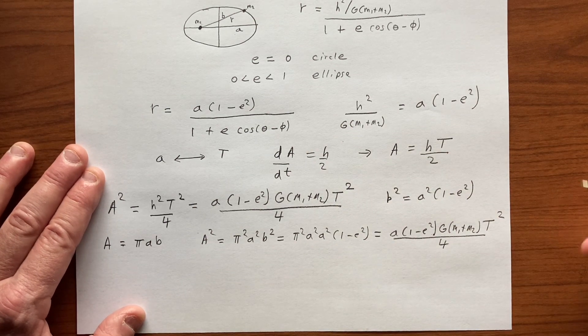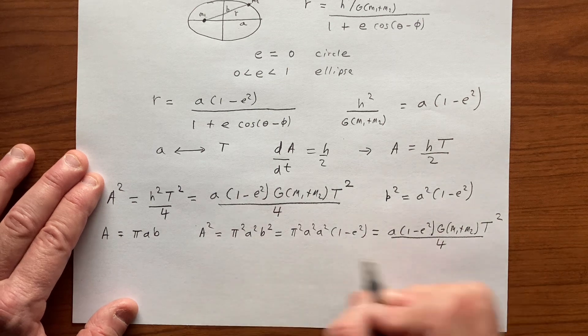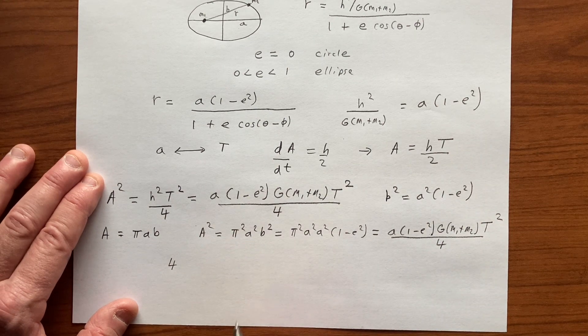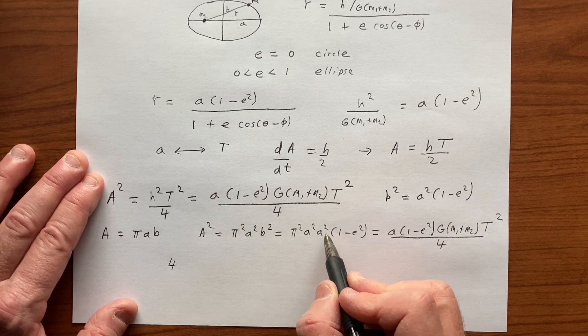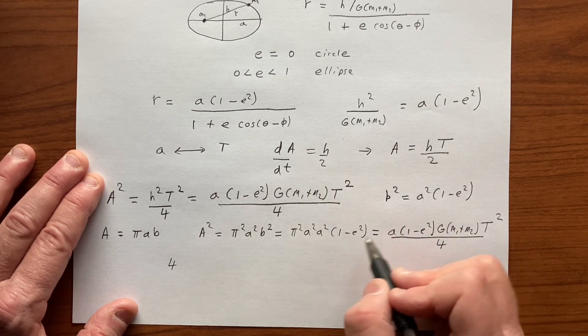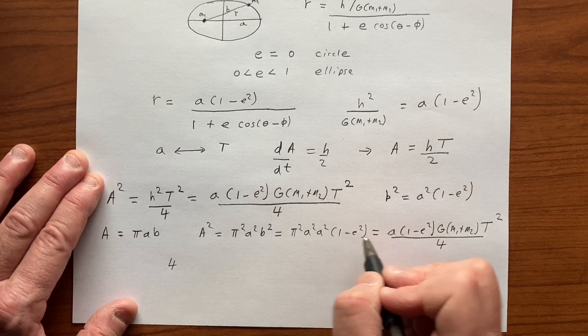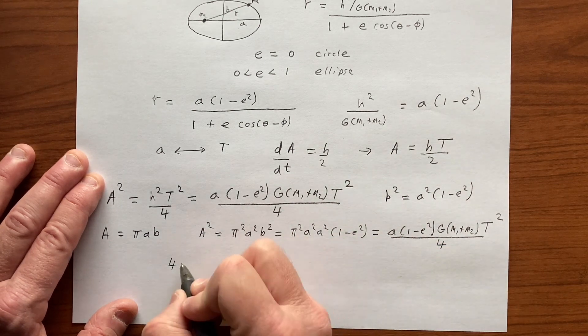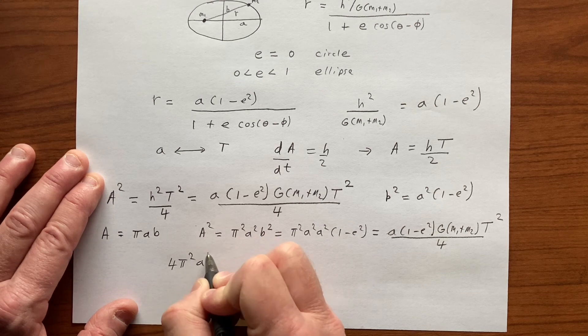And so we get that, let's bring the 4 over here, we get 4. So this equals that, we can cancel a factor of A, we'll cancel this entire thing here, and that'll leave one factor of A here. So we get 4 pi squared A cubed.